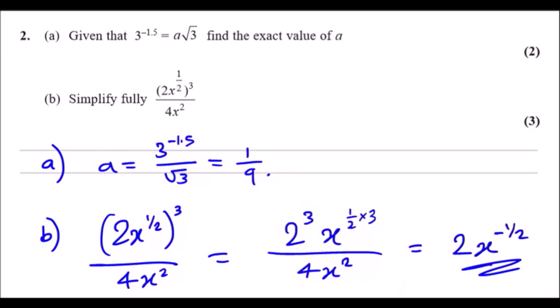You can just put 2 to the power 3 over 4 - all of this bit will give us 2. Then you'll realize here that 1/2 times 3 will give us 3/2. And because you're dividing the terms, you subtract the powers, so it'd be 3/2 minus 2, which will give us -1/2.